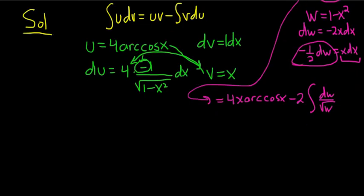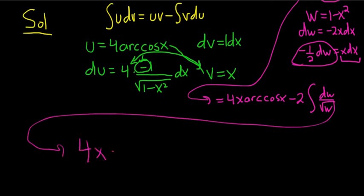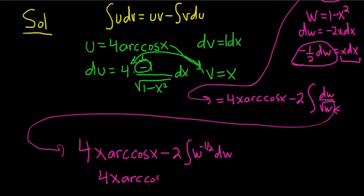I'm going to come over here. So we have 4x arc cosine x minus 2. And this is w to the 1 half. And so when you bring it upstairs, it becomes w to the negative 1 half dw. So this is 4x arc cosine x minus 2. Now we use the power rule, so we'll add 1 to this.